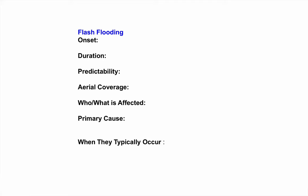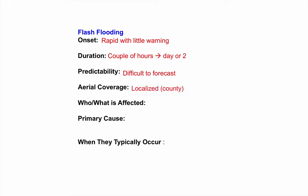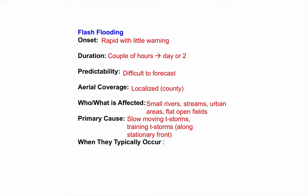That gets us to our last type: flash flooding. Flash flooding onset is rapid, with little warning — hence the name. Duration is a couple of hours to a day or two. Is it predictable? Absolutely not — it's all about thunderstorms, and they're the most difficult thing to forecast long-term. It typically covers a very localized area, maybe the size of a county. Anybody inside that county living near small rivers, streams, urban areas, or flat open fields can flood very quickly without much warning. The primary cause is slow-moving thunderstorms, especially those that train along stationary fronts. Because flash flooding is associated with thunderstorms, it typically occurs March to September.